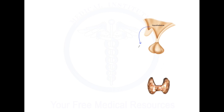So what happens is that the hypothalamus releases these hormones called the thyrotropin-releasing hormones, or TRH, which act on the anterior pituitary and cause it to release these other hormones called the thyroid-stimulating hormones, or TSH, which I'm drawing here as triangles.